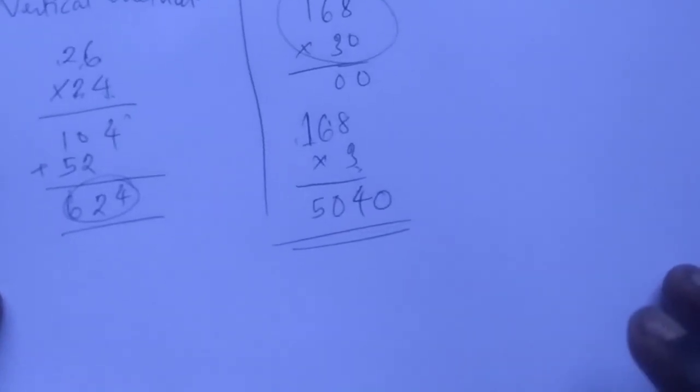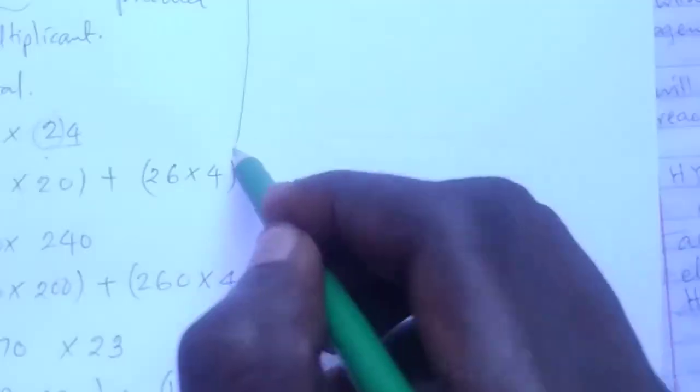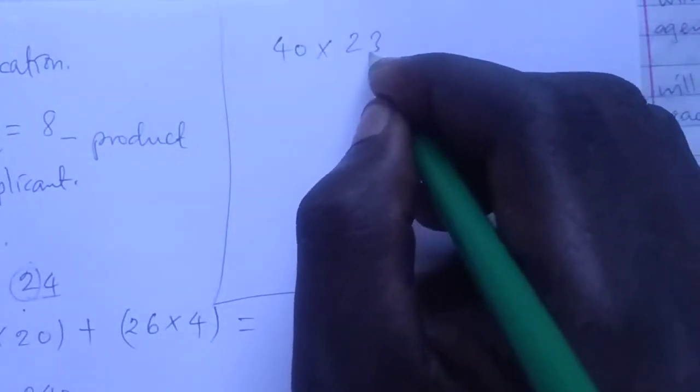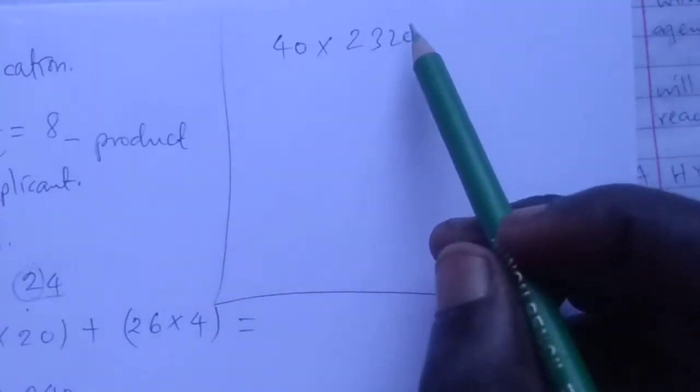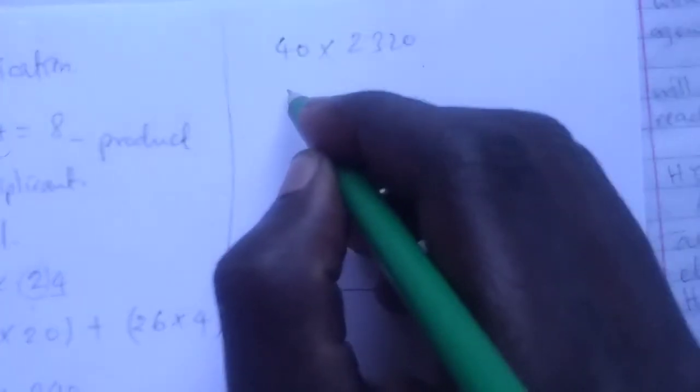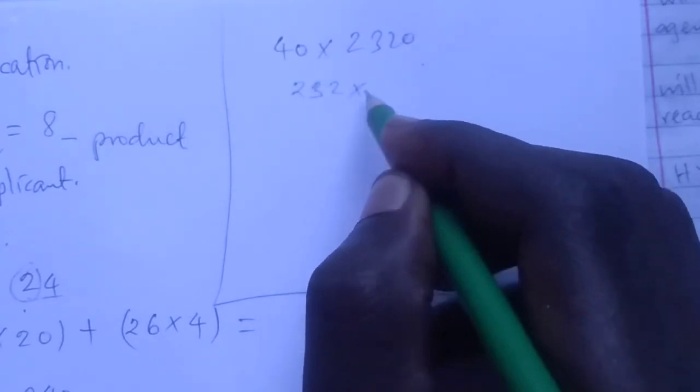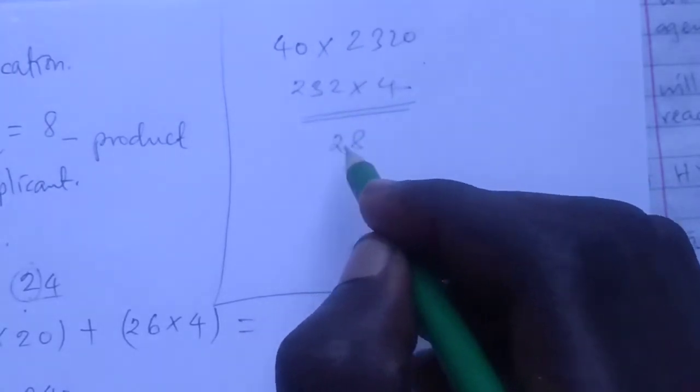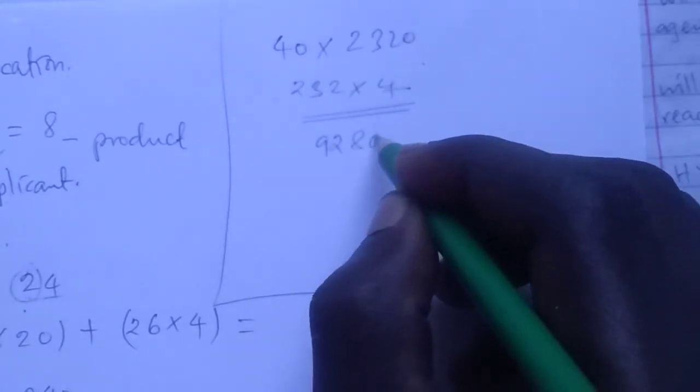When you are given numbers to multiply, let's say 240 times 320, these zeros don't need to be multiplied as all zeros. Instead of writing all the zeros, if there are two zeros, you can just add two zeros at the end. This is the same as 24 times 32. We get 8 here, then 12, then 8, plus 1 is 9, then we add two zeros.